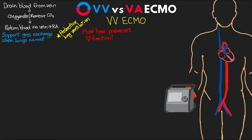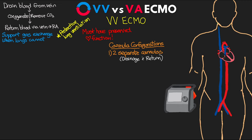For VV ECMO, there are two main cannula configurations. The first uses two separate cannulas — drainage and return. The drainage cannula is placed in the femoral vein, positioned with the tip at the border of the inferior vena cava and the right atrium. The return cannula is usually placed in the right internal jugular vein, with the tip at the border of the superior vena cava and the right atrium. To ensure proper placement, we want to be doing this under fluoroscopy.